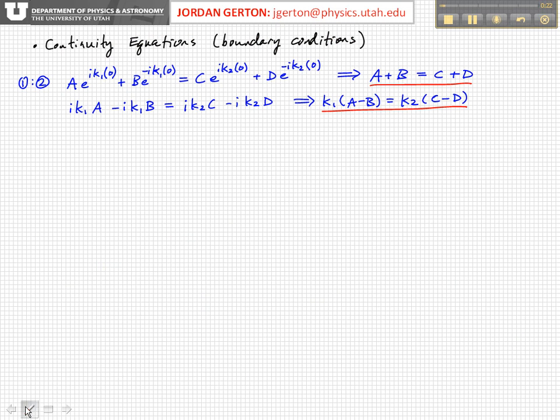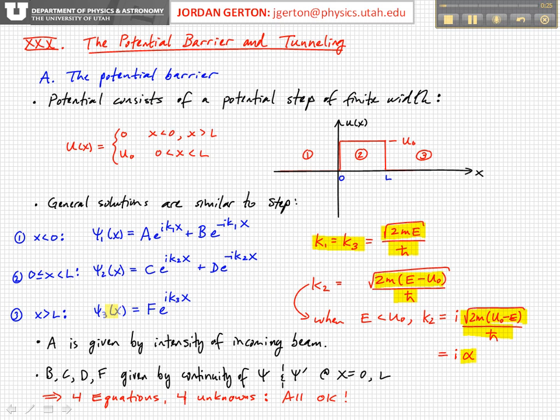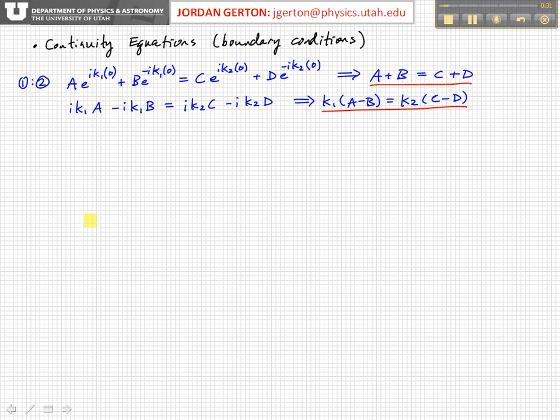So at the interface between region 1 and region 2, right at that plate at x equals 0, then we have the left-hand solution, the solution in region 1 at x equals 0 is A e to the i K1 times 0 plus B e to the minus i K1 times 0. E to the 0 is just 1, and so this will be A plus B, and then on the right-hand side we have something similar except now we're going to get C plus D.